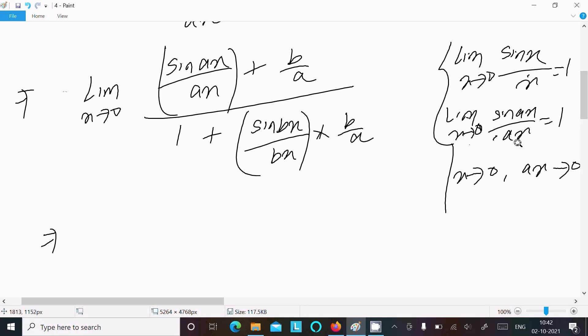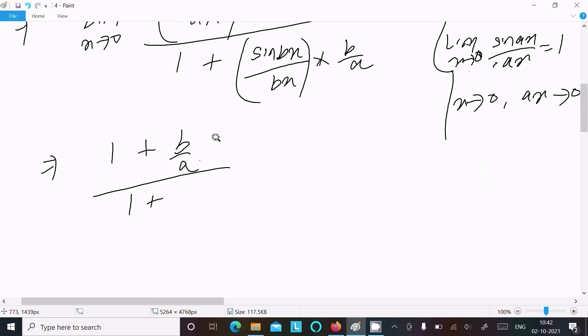So sin(ax)/ax = 1 and sin(bx)/bx = 1. This gives us (1 + b/a) in the numerator and (1 + b/a) in the denominator.